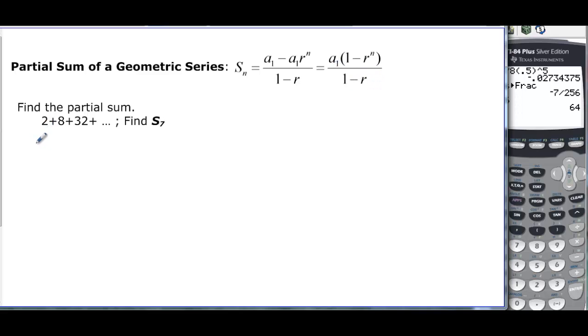So let's see what we know. For this partial sum, I have a sub 1 is equal to 2. I also need my r, so r is going to be equal to 8 divided by 2 equals 4. 32 divided by 8 equals 4. So r is equal to 4, and we found r, and we're ready to go.